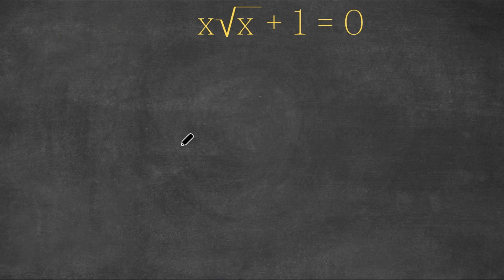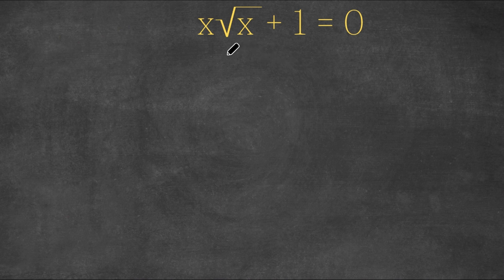Hey guys, welcome back to Click Academics. In today's video, I'm going to be teaching you guys how to solve this problem. We have x times the square root of x plus one is equal to zero.